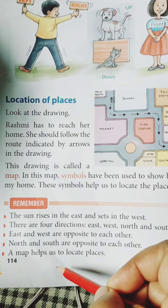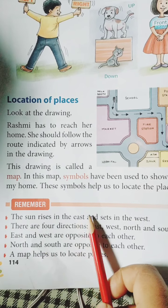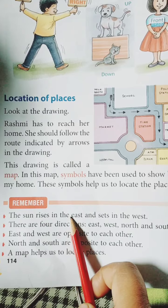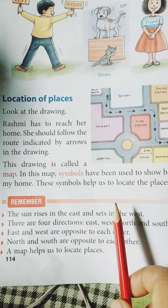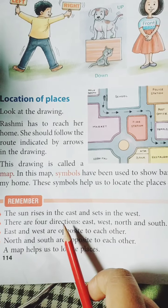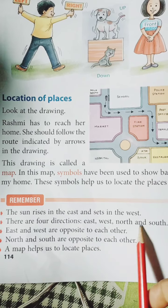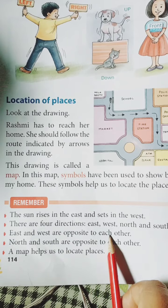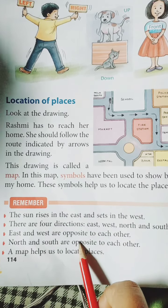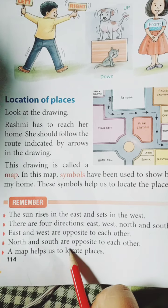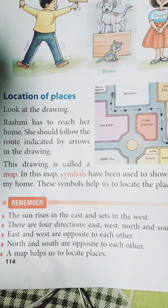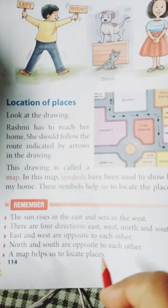Students, always remember the following points: The sun rises in the East and sets in the West. There are four main directions: East, West, North, and South. East and West are opposite to each other. North and South are opposite to each other. Maps help us to locate places.